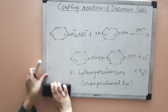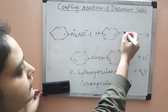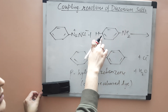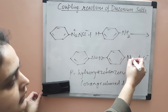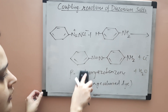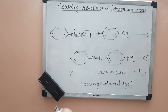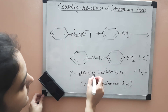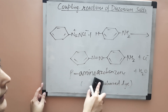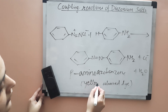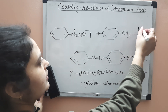Now if you react benzene diazonium chloride with aniline, the para position of aniline will get coupled with the diazonium group and you will get para-amino azo benzene. This is a yellow colored dye, and this reaction occurs in the presence of H⁺.